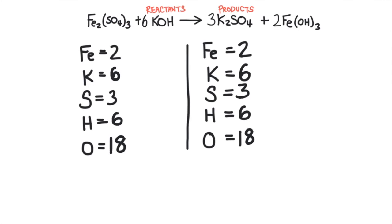Now I can check to see if everything's balanced, and I can see I have the same amount of each kind of atom on both sides of the equation. So we've balanced this chemical equation.